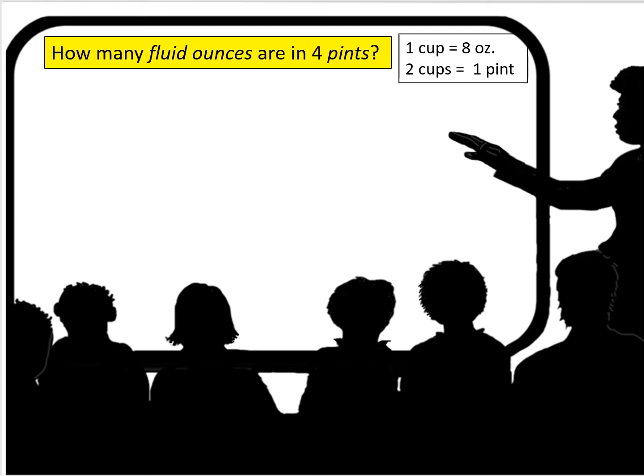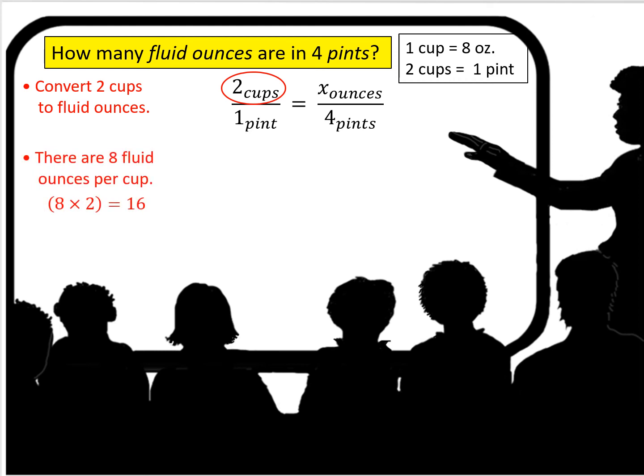We're going to set up our ratio, and we're going to use what we know. We know that two cups equals one pint. So we got the pints in the denominator. That makes sense. But now we have to convert two cups to fluid ounces. So there are eight fluid ounces per cup, and eight times two, there are 16 fluid ounces per pint.